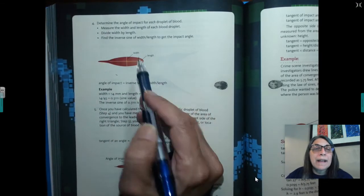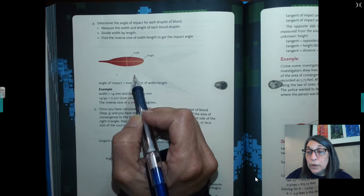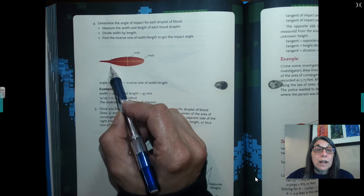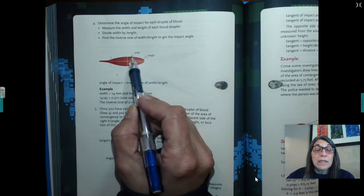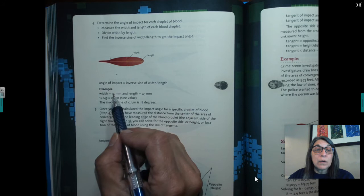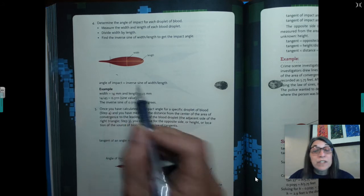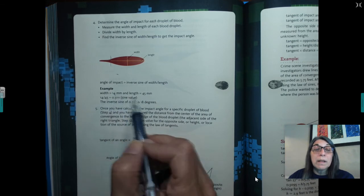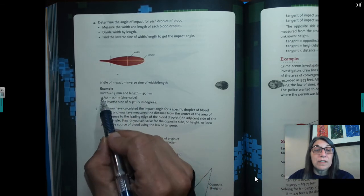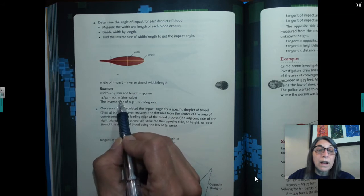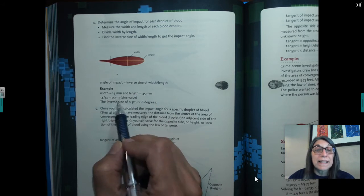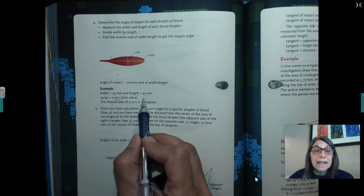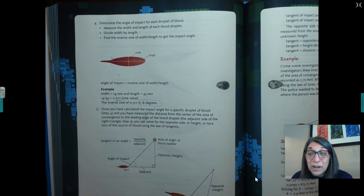So you're going to determine the angle of impact. Remember this? This is the one we did where you guys created the blood drops and then we came back to class and I had you guys get rulers out and you measured the length and the width. In this example, the width was 14 millimeters. The length was 45 millimeters. You take the width, divide it by the length, and you come up with a decimal that's out four places. And then you use the inverse sine on your calculator and you came up with 18 degrees. And here's something cool. If you don't know how to do it on your calculator, the back of our book actually has a table for this.